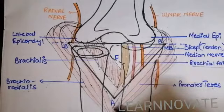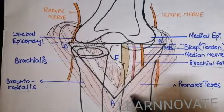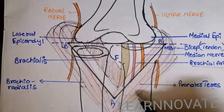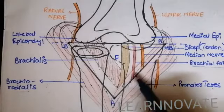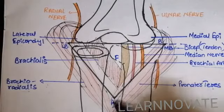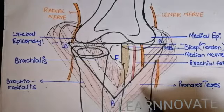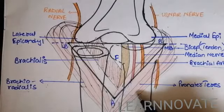This brachial artery will divide into two arteries that we call as the radial and the ulnar artery. At the lower end, or at the apex of the cubital fossa, this brachial artery will divide into the radial and the ulnar artery.